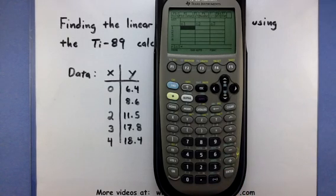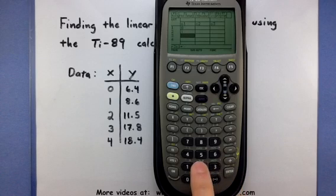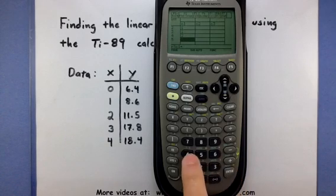So this brings you into the data matrix editor screen, and it looks a lot like an Excel sheet or something. So what we're going to do is start entering in all of our data, and we do it one column at a time. So zero, enter, one, enter, two, enter, three, enter, four, enter.